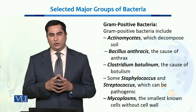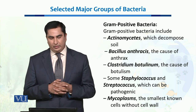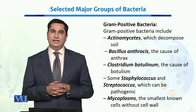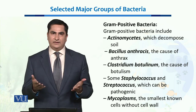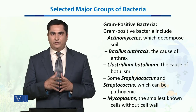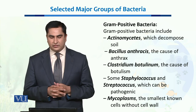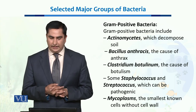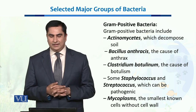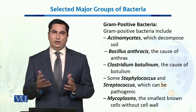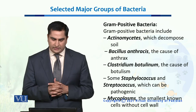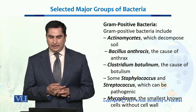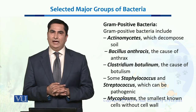Some gram positive bacteria include actinomycetes, which decompose soil. Then we have Bacillus anthracis, which causes anthrax disease, a dangerous disease of humans as well as animals. Then we have Clostridium botulinum, which causes botulism in humans. Some Staphylococcus and Streptococcus species can also be pathogenic occasionally. Finally, we have mycoplasmas, which are the smallest known bacteria and do not have any cell wall.